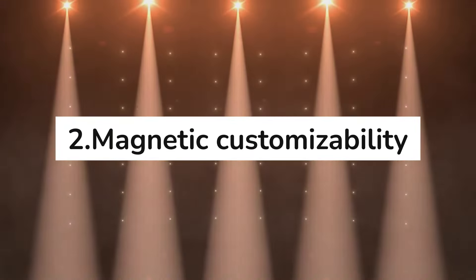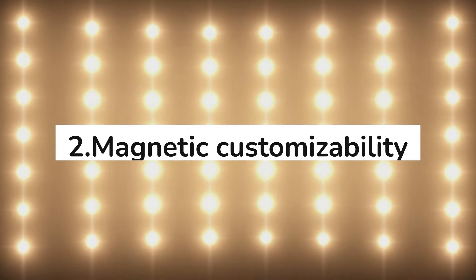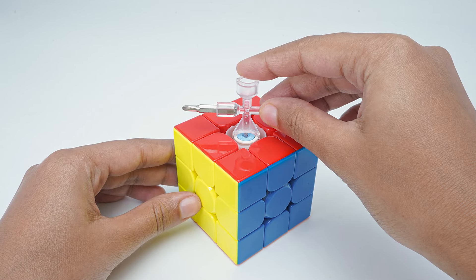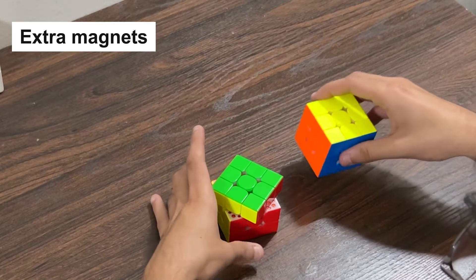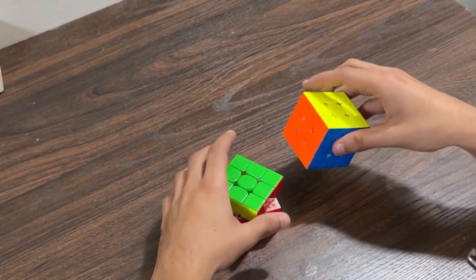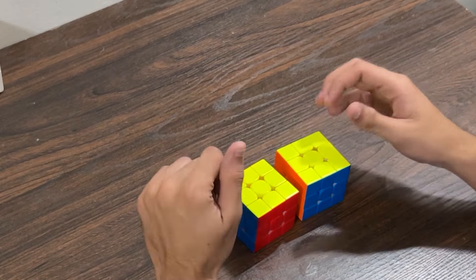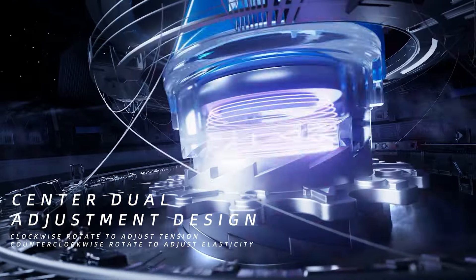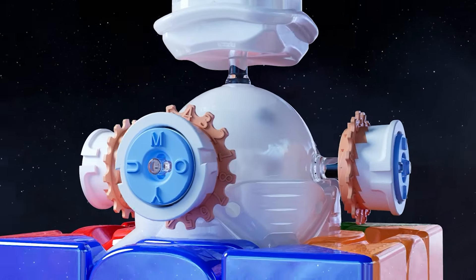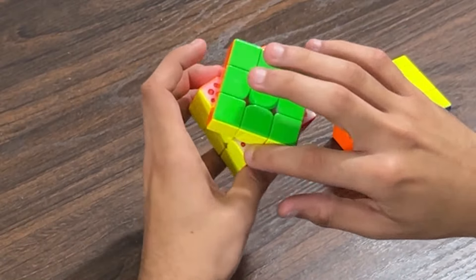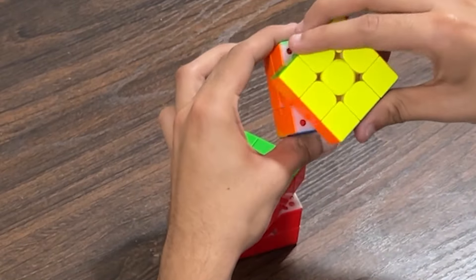Let's first discuss about magnetic customizability. One of the standout differences between the two cubes lies in how easy it is to adjust their magnets. The Tornado V4 allows you to easily adjust the magnet strength with five built-in settings. In contrast, the WRM V10 doesn't have any magnetic adjustment features, so you are limited to the default magnetic strength. For those who enjoy customizing their cube to suit their turning style, the Tornado V4's magnetic customizability is a clear winner.